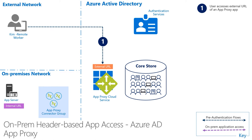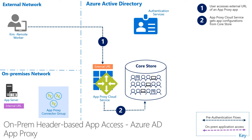In step one, Kim goes to the URL that she bookmarked for the PeopleSoft application. Under the covers, DNS is pointing to the App Proxy cloud service. With App Proxy, we can use the same internal and external URL, so users don't have to remember two separate URLs when coming from inside or outside the corporate network. In step two, the App Proxy cloud service uses the original URL of the HTTP request to check the core store to find the app configuration — in this case, it has configuration for header-based auth.